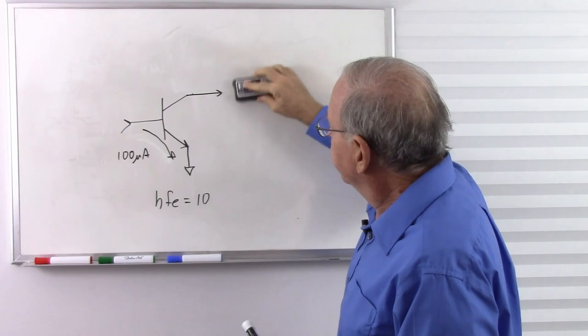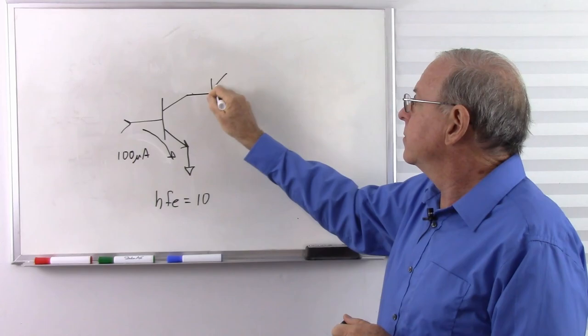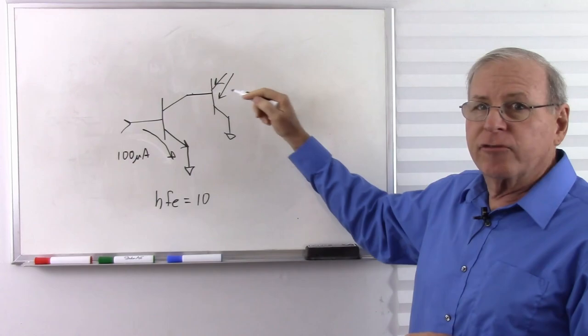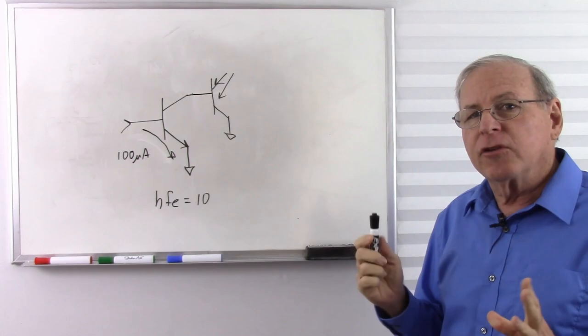For example, with an open collector design, I could run this to a PNP transistor, and when I start to pull current through that PNP transistor, it will start to turn on. So that gives me some flexibility if I have an open collector circuit.